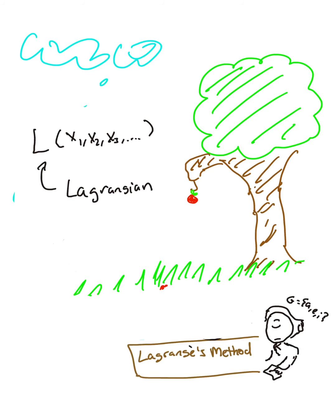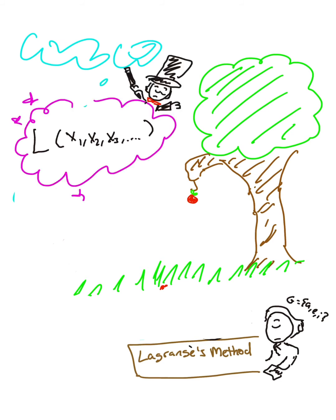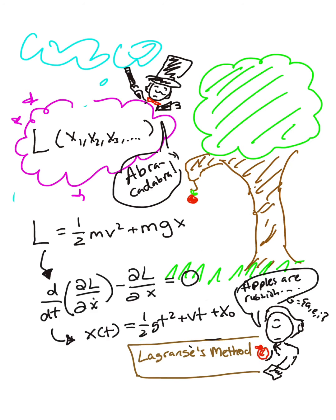The Lagrangian encodes all the forces acting on the object implicitly. You can think of the Lagrangian as a magical function that tells us everything we care about the system in a single line. We can put this Lagrangian into what is called the Euler-Lagrange equations to obtain the equations of motion of the apple.